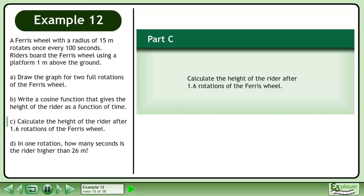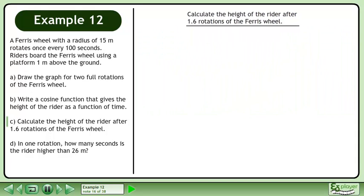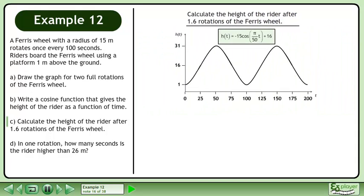In part C, calculate the height of the rider after 1.6 rotations of the Ferris wheel. Bring up the graph and its function. We need to find the time required for 1.6 rotations.